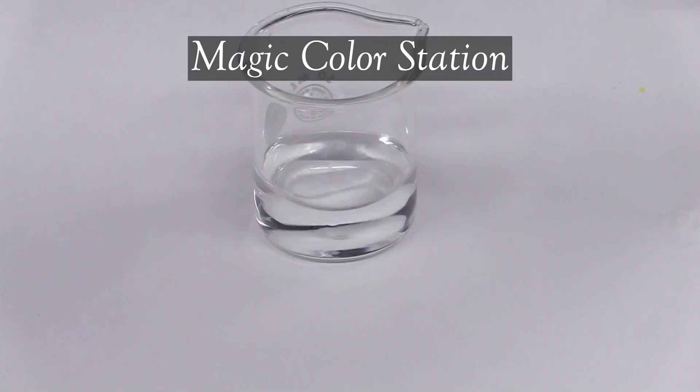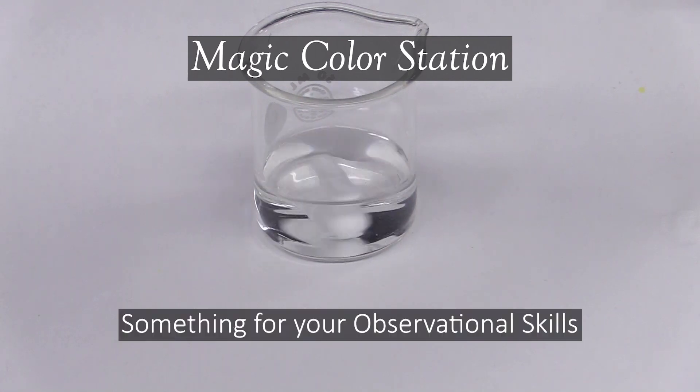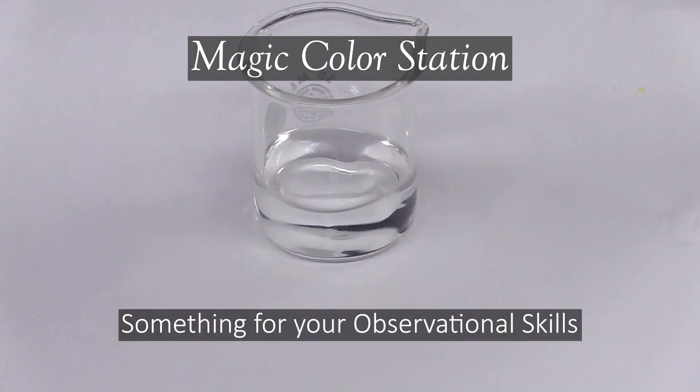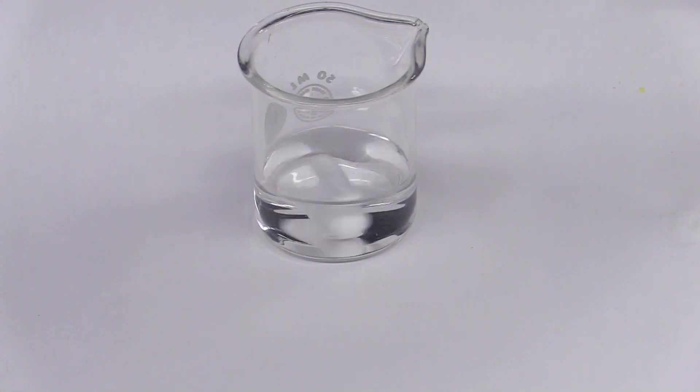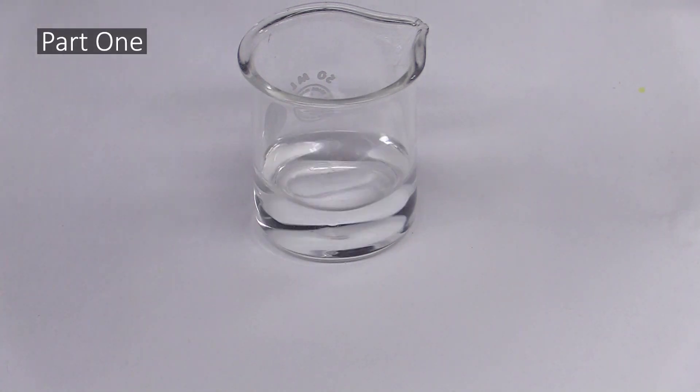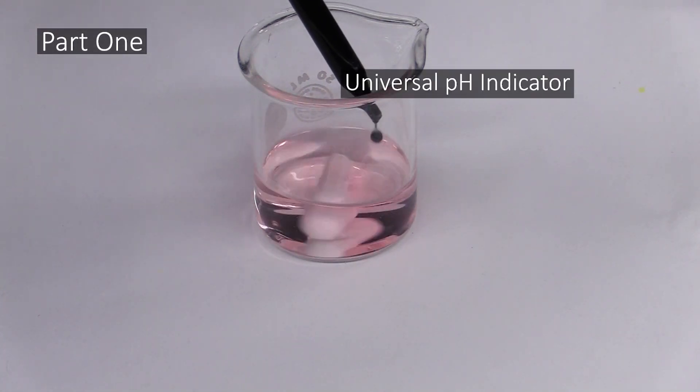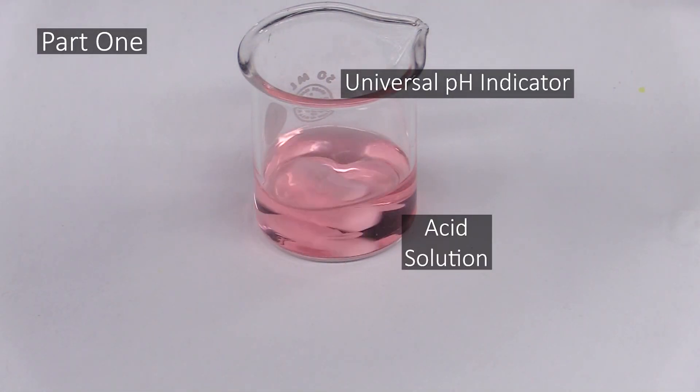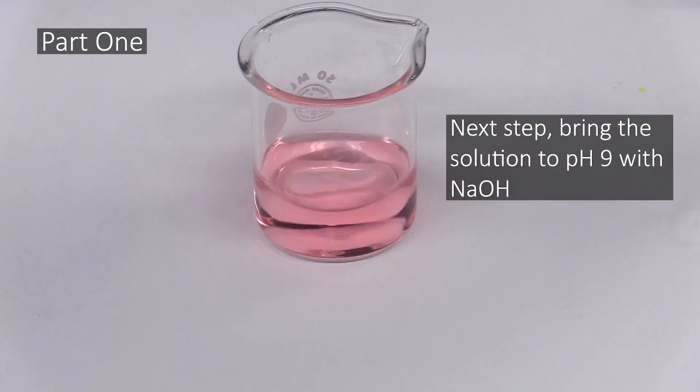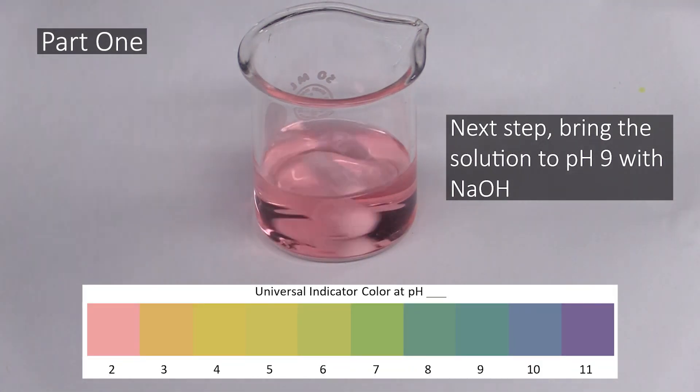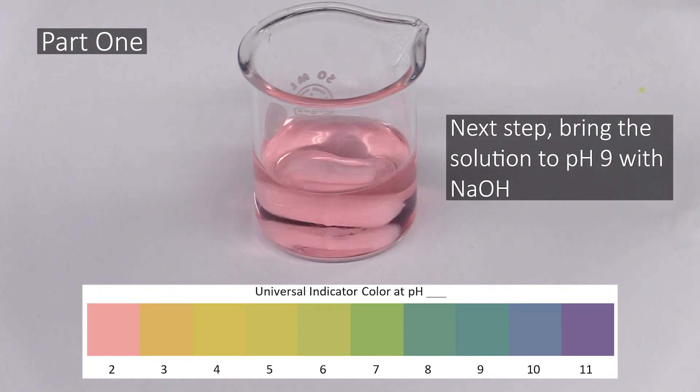Moving on to the magic color station. This one is somewhat unique in that there are no hypotheses to test here. It's mostly about honing your observational skills. This experiment will take place in two parts. In part one, you will first add a couple drops of universal indicator to a solution of acid. You'll then bring the solution's pH up to 9 by slowly adding sodium hydroxide solution to it. The indicator will tell you when you've reached the right pH by causing the solution to change to a certain color when it's at that pH.